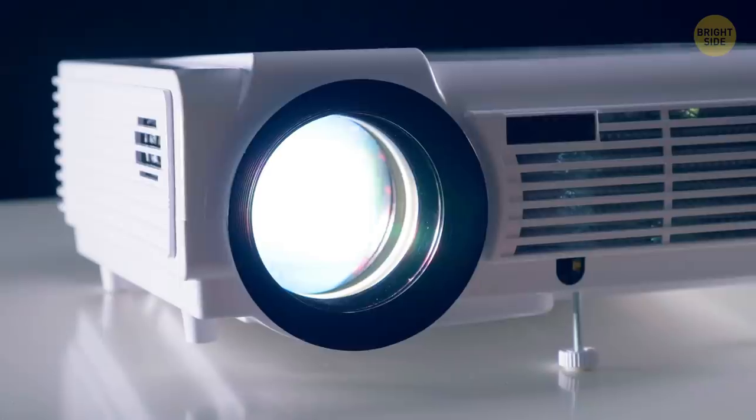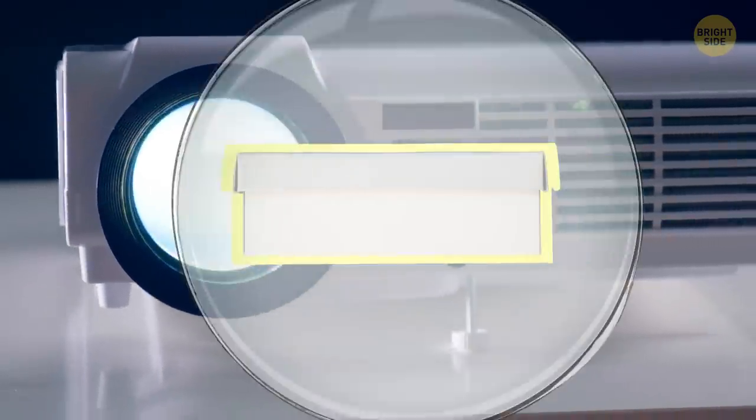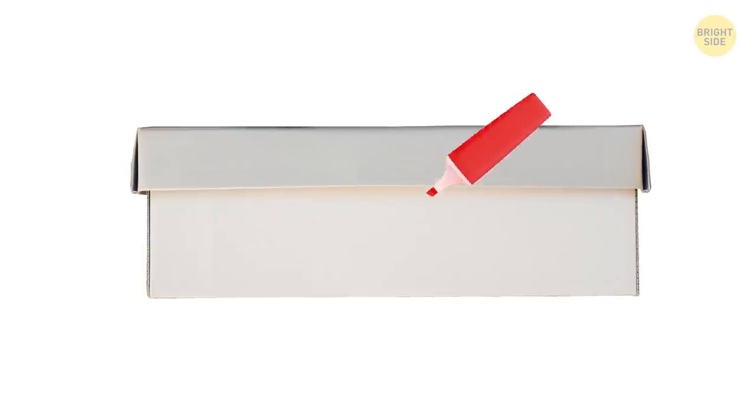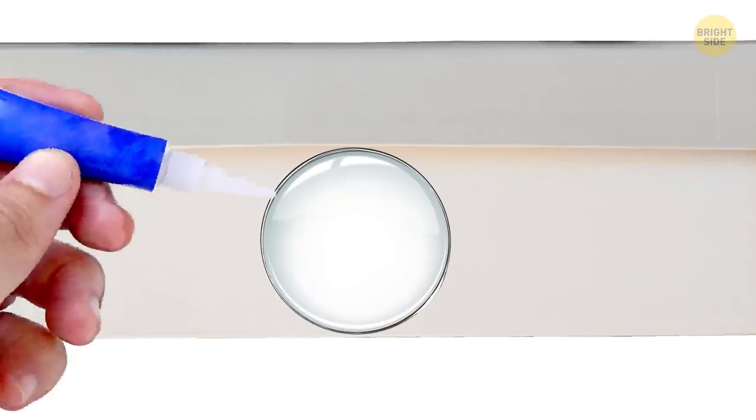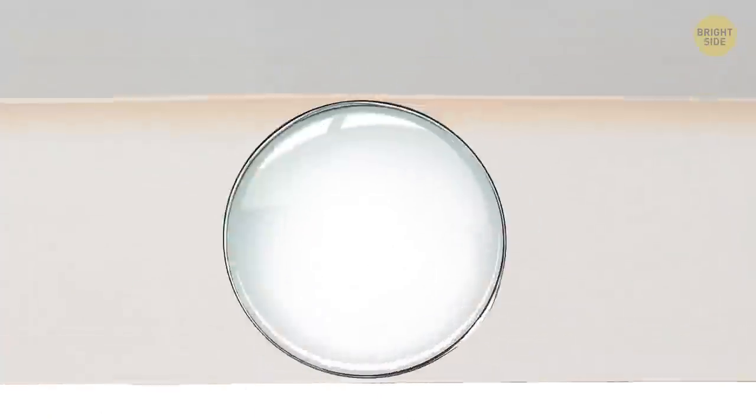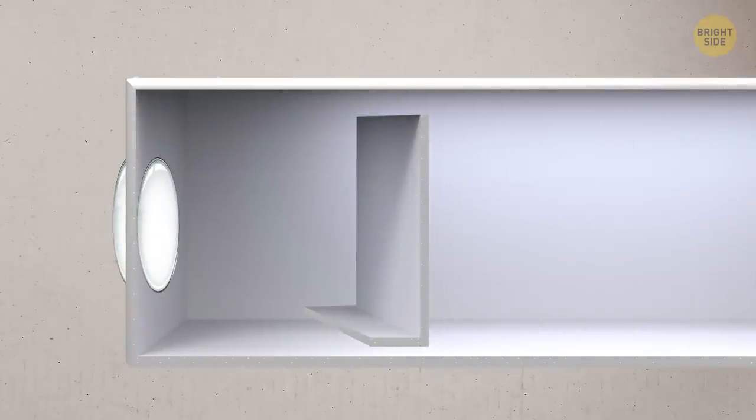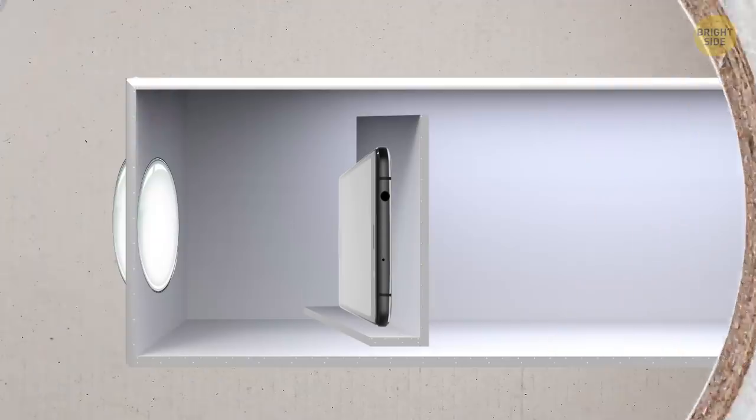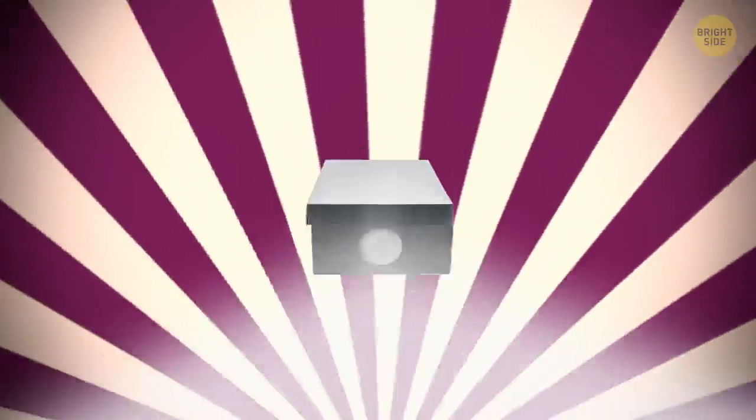Build a projector for your phone from a shoebox and a magnifying glass. Draw the outlines of the lens on the side of the box. Cut a hole and attach the magnifying glass to the box with superglue. Put a phone stand, made of two pieces of cardboard, inside the box. Attach your phone to the stand with double-sided tape. Set the device to maximum brightness, lock the screen, and get it focused.